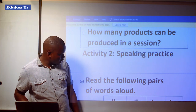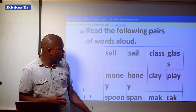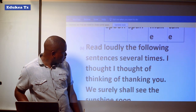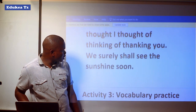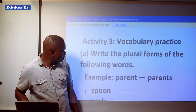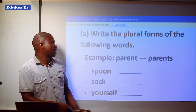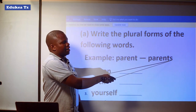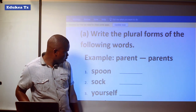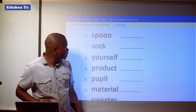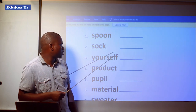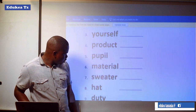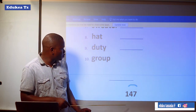And the other activity is speaking: read the pairs of words. We read them a lot so we may skip it. Also reading the given sentences several times — we may skip it. Let us have this exercise: write the plural forms of the following words. Example: parent — parents. Words to pluralize: spoon, sock, yourself, product, people, material, sweater, hat, jute, group.